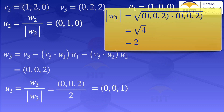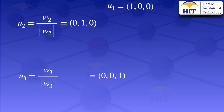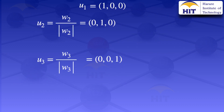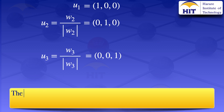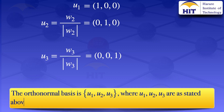We have now found U1, U2, and U3 using the Gram-Schmidt orthogonalization process. Those vectors U1 = (1,0,0), U2 = (0,1,0), and U3 = (0,0,1) are the orthonormal basis for the subspace spanned by the original vectors. If you have any questions, you can let me know in the comment section.